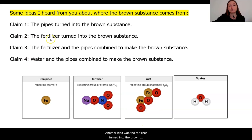Another idea was the fertilizer turned into the brown substance. So here we see that the fertilizer looks very similar to the rust, it just has some different atoms. So perhaps when the fertilizer got into the water, it changed into this rust and these atoms changed into the iron that is in the rust.